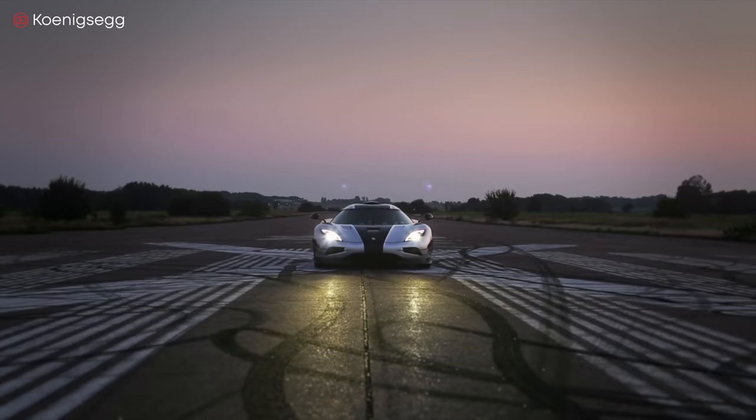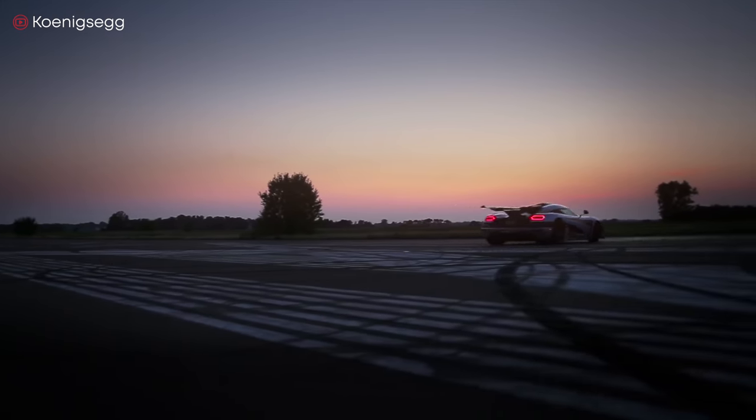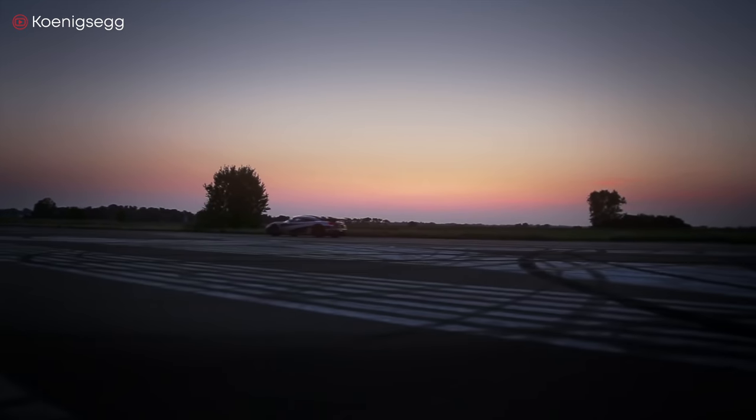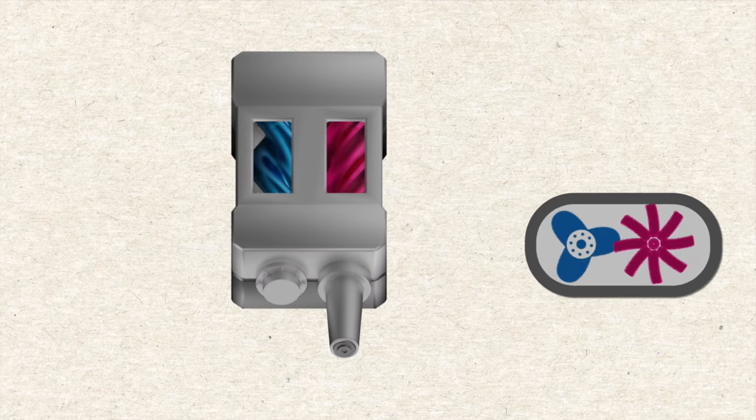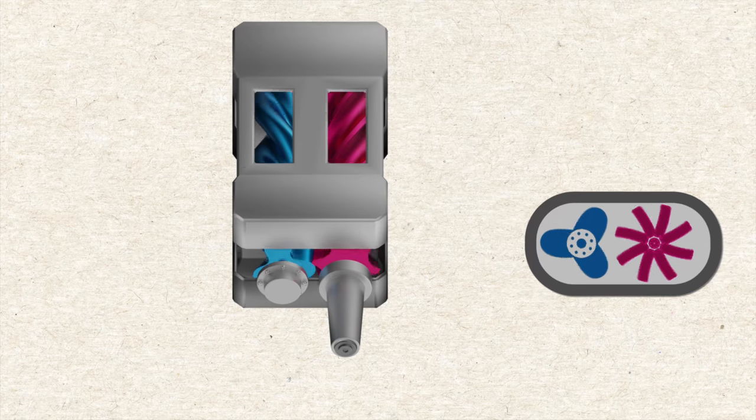The centrifugal supercharger powers an impeller at high speeds, often more than 50,000 RPMs, to quickly draw air into the compressor. It's kind of like what the fan in your bathroom does when you take a hot steamy shower. It provides ventilation for the steam to blow out of the room.